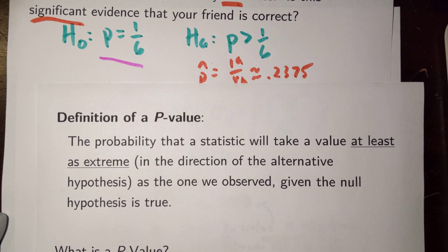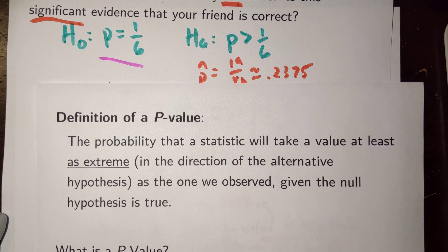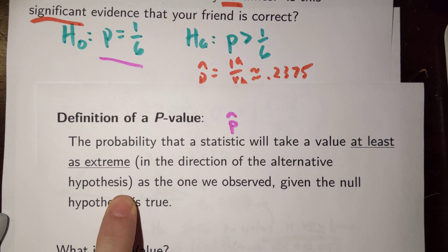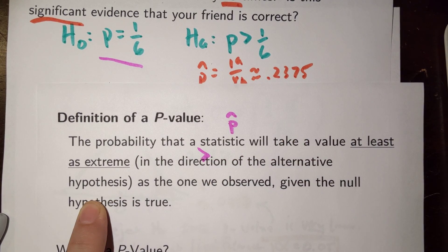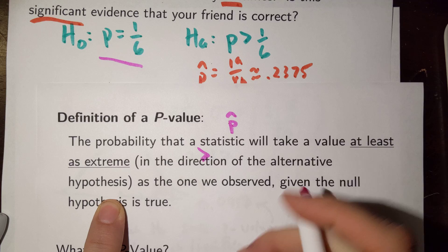So, what is a p-value? It's the probability that a statistic will take a value at least as extreme in the direction of the alternative hypothesis as the one we really observed, given that null hypothesis is true. The statistic, in this case, we calculated was p-hat. The direction of our alternative, remember, the direction of our alternative was greater than.